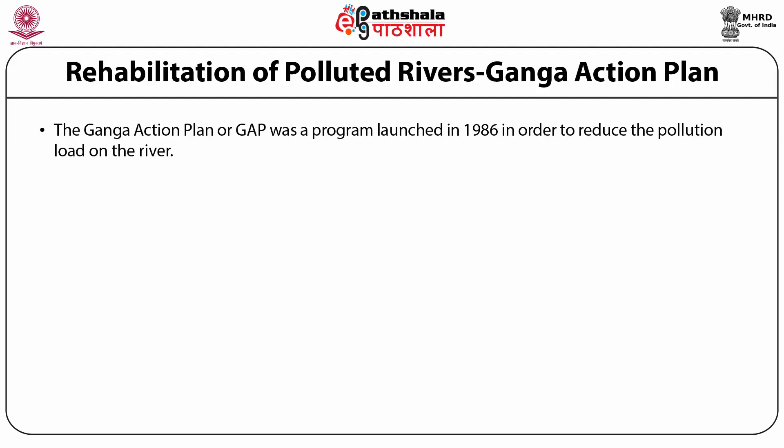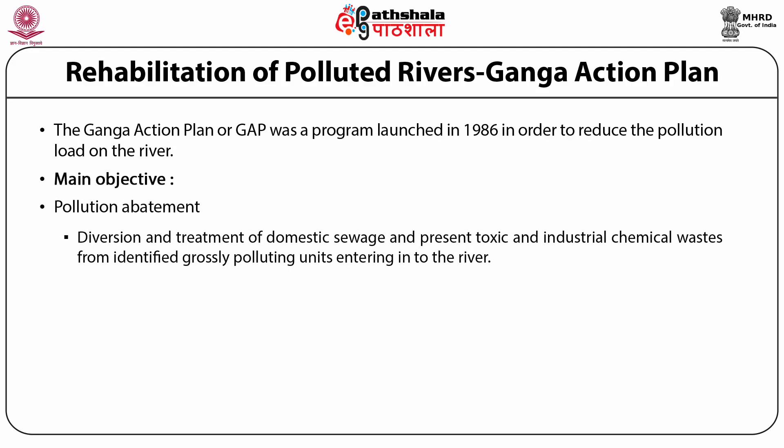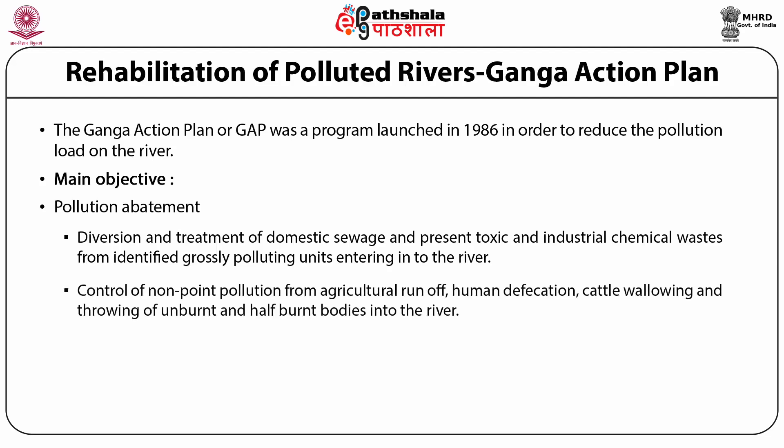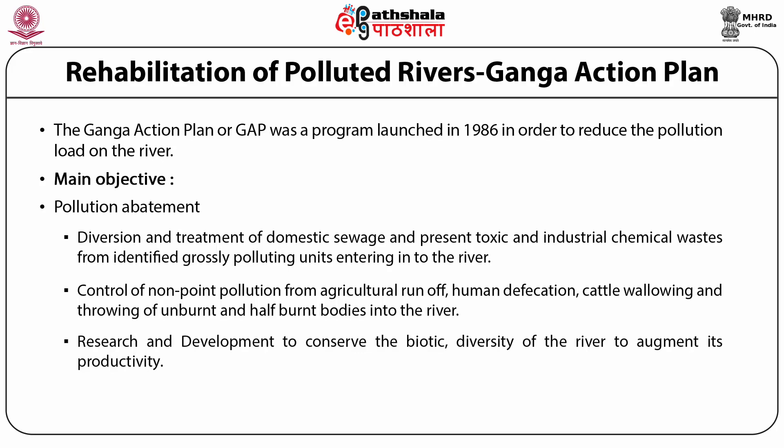Rehabilitation of polluted rivers — that is, the Ganga Action Plan. To control water pollution, different agencies, government and public bodies plan and implement different technologies and processes. The Ganga Action Plan is a very important part of controlling water pollution. The Ganga is one of the most polluted rivers in the world, where recreational and spiritual activities cause people and different industries to deposit or release different pollutants into the river. In order to control this water pollution, in 1986 the Ganga Action Plan was launched, with the main objective of diversion and treatment of domestic sewage and prevention of toxic and industrial chemical waste from entering the river, as well as control of non-point pollution from agriculture runoff, human defecation, cattle, and throwing of unburned and half-burned bodies into the river.